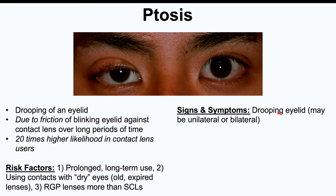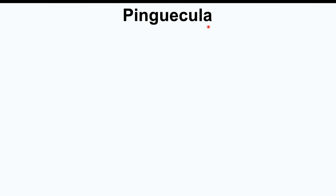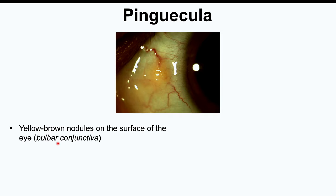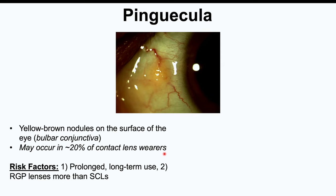The signs and symptoms of ptosis are a drooping eyelid, which may be unilateral or bilateral — affecting one or both eyes. Another condition that can occur with contact lens use is a pinguecula — a yellow-brown nodule on the surface of the bulbar conjunctiva. A pinguecula may occur in up to 20% of contact lens wearers. Risk factors related to contact lens use include prolonged long-term use of contact lenses and using RGP lenses as opposed to soft contact lenses.